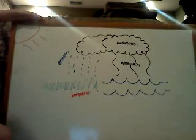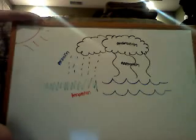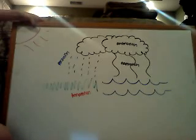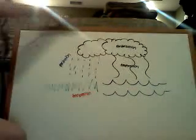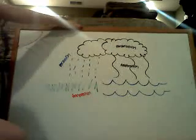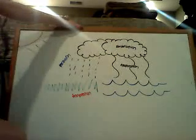First of all, the sun heats the grass, the land, and the water, and when water gets hot it turns into a gas, which evaporates into a cloud, which is called condensation.